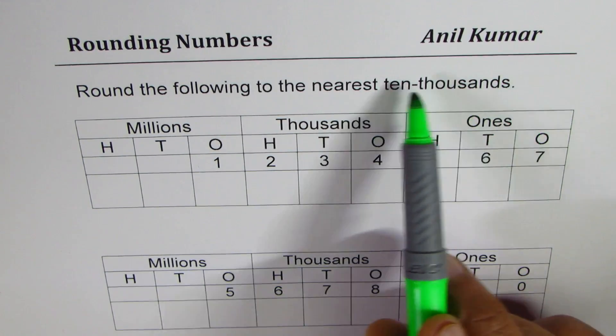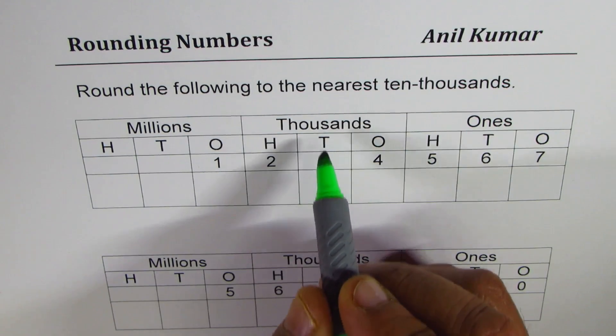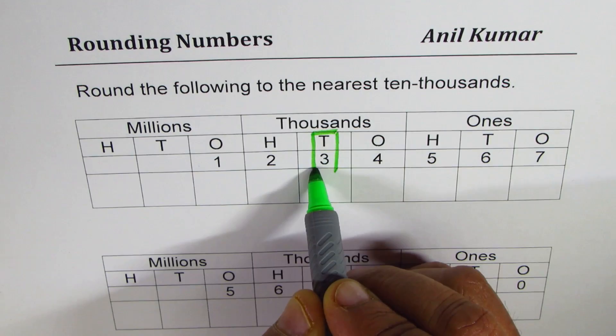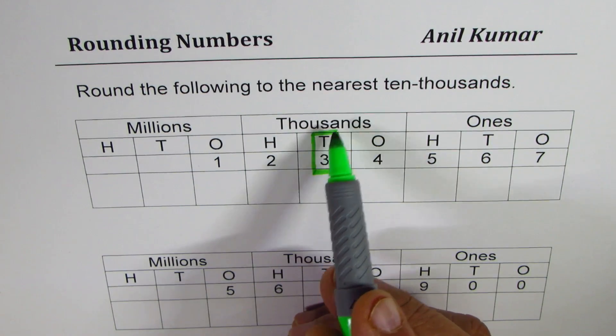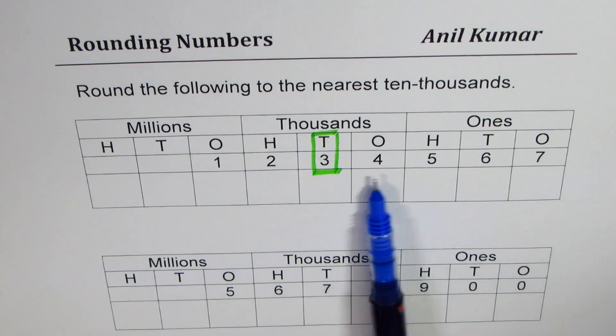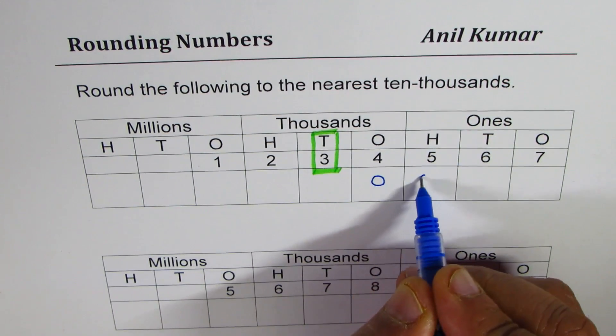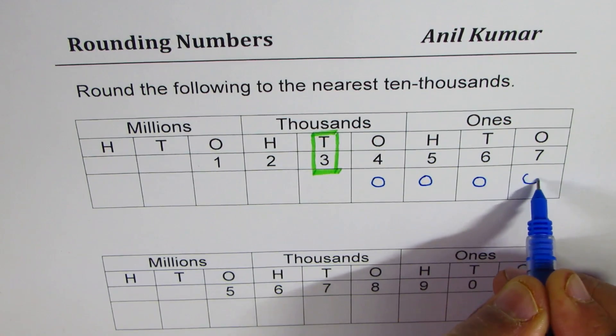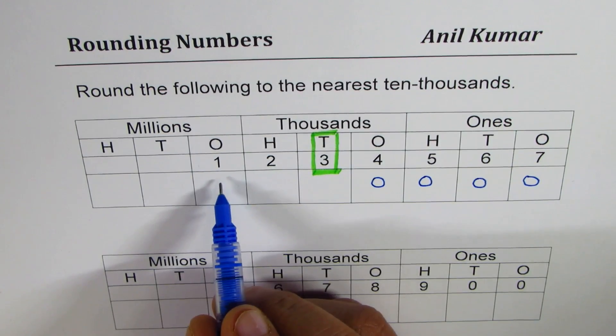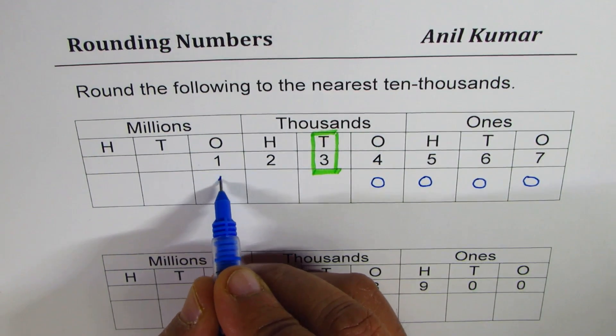When we round this number to ten thousands then we are looking at the digit which is at the place value of ten thousands. All the numbers to the right of this will become zero. So just write zeros for all the numbers to the right of the digit. All the numbers to the left of the digit will be repeated as such without any change most of the time.